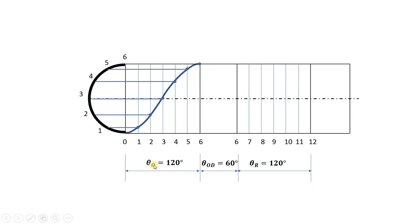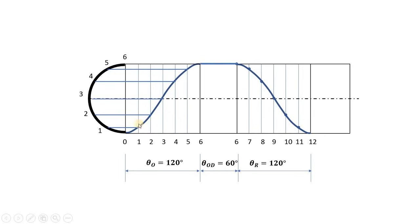Since both the out stroke and return stroke are of simple harmonic motion, we can translate these same points onto the return side as well. As you can see, the same points will be present for the return stroke. Join a smooth curve through these points — this is the curve for the return stroke, followed by the dwell. So the displacement diagram for this particular problem is now complete.